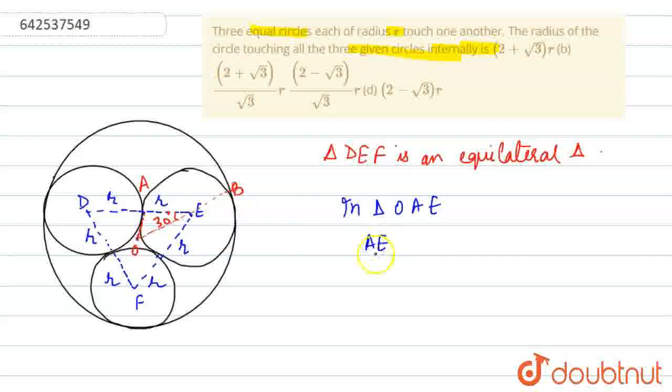This angle will be 30 degrees. Now let us suppose in triangle OAE, we have AE upon OE. We have drawn this as perpendicular, so this angle is 90 degrees. Therefore, we have cos 30 degrees equals AE upon OE. From this, we get OE equals AE upon cos 30 degrees, which equals r divided by root 3 over 2.